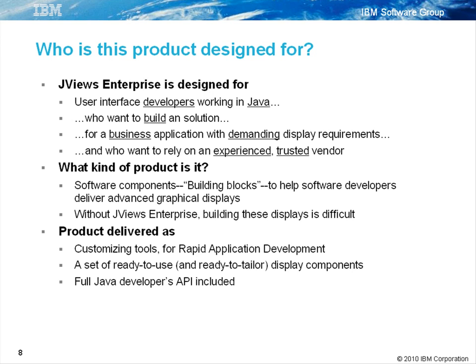JVs Enterprise helps developers build the user interface. It provides a set of software components — building blocks — to help deliver advanced displays that would otherwise be too difficult to build. These building blocks act like engines embedded into an application, driving part of the user interface. For example, if developers are building a finance application, JVs Enterprise can provide a chart building block. The product is delivered with six point-and-click editors for quickly customizing display components, the display components themselves, and a full Java API — ensuring developers get up to speed quickly, can use the building blocks as-is or easily tailor them, and can drop down to the API level for further customization.